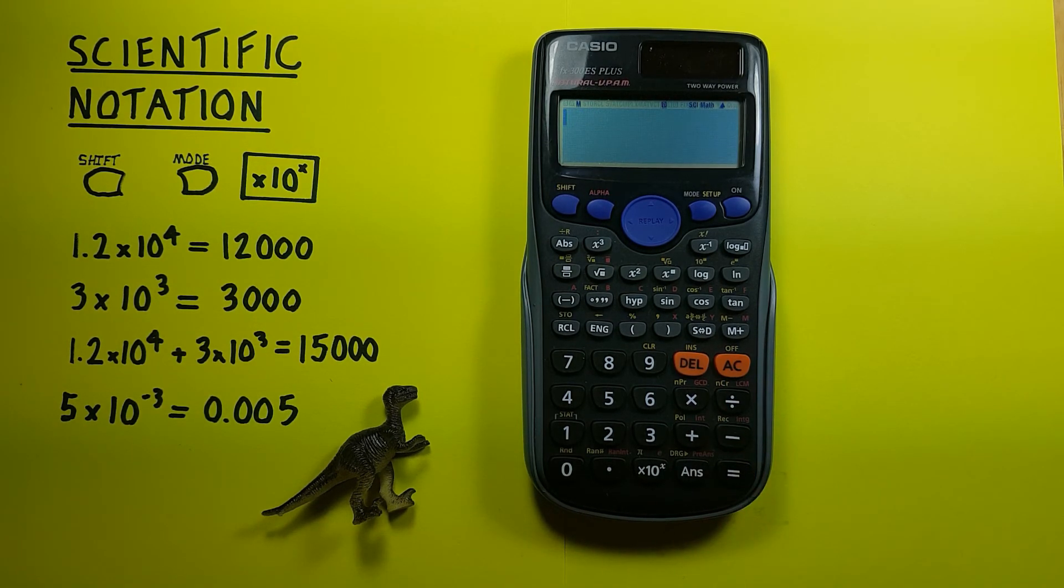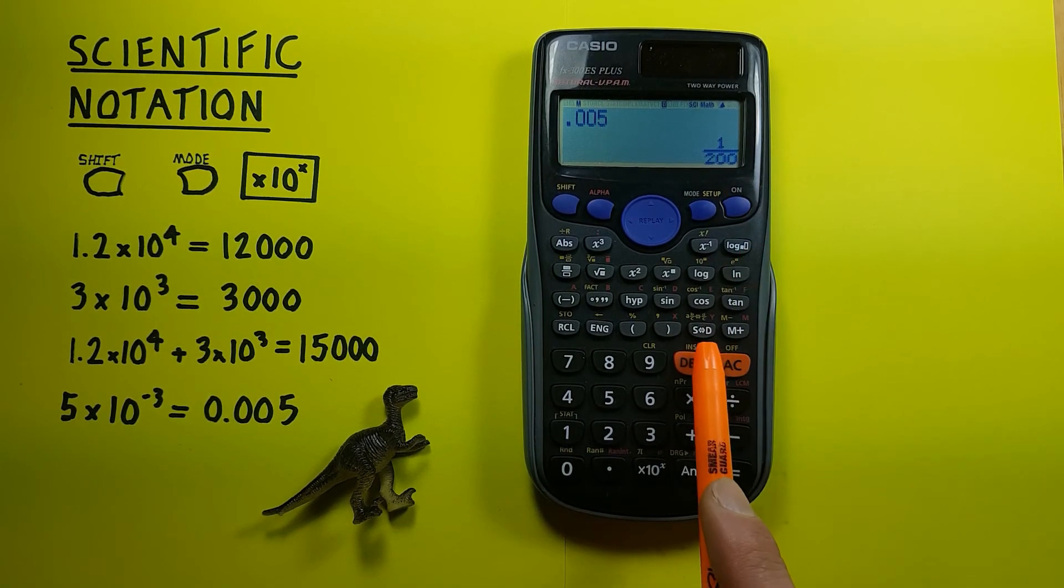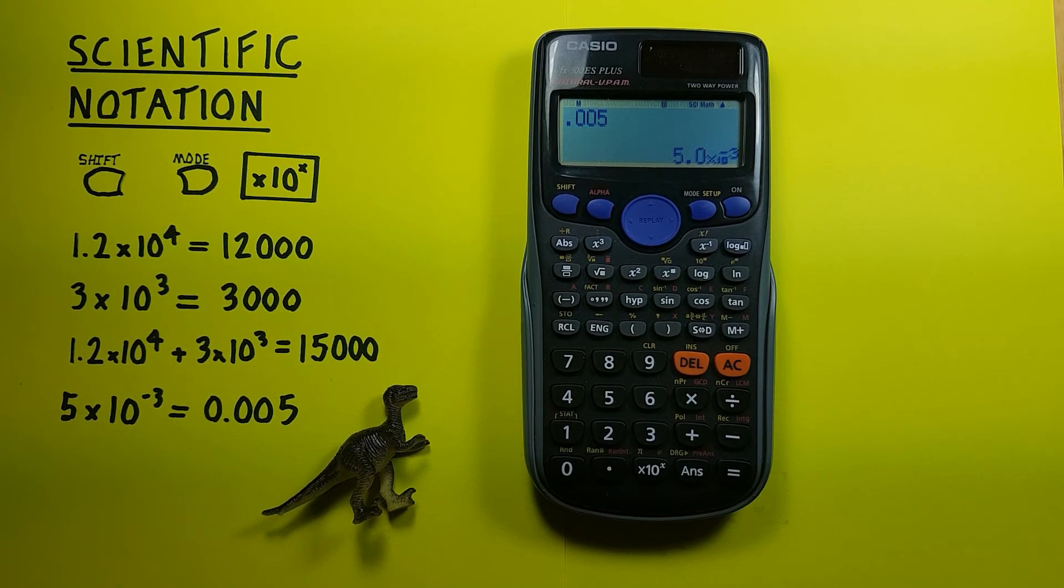Same thing with small numbers. So if we go 0.005, press equals. Again, this gives us a fraction initially, but if we press the S to D key, we see it converts to 5.0 times 10 to the power of negative 3.